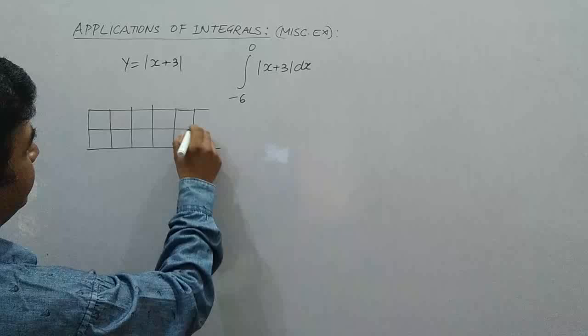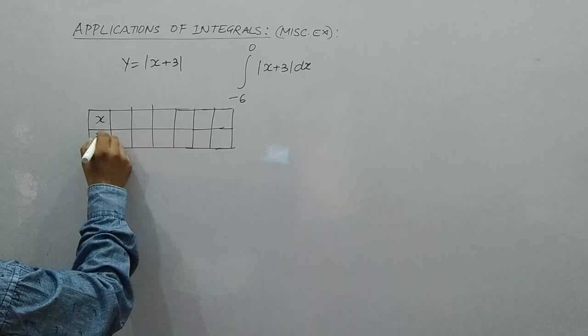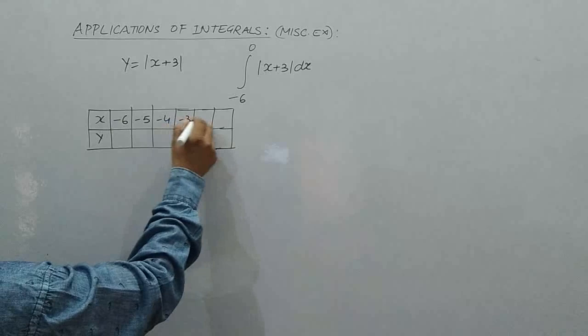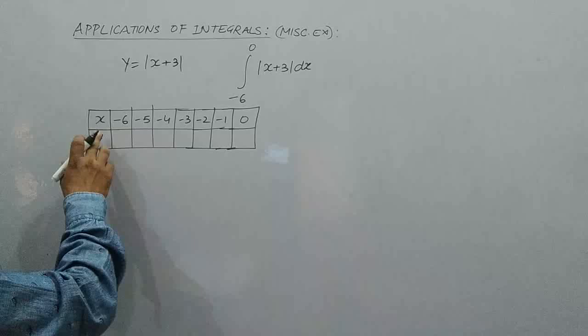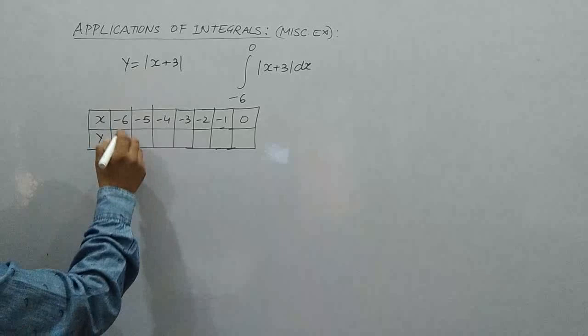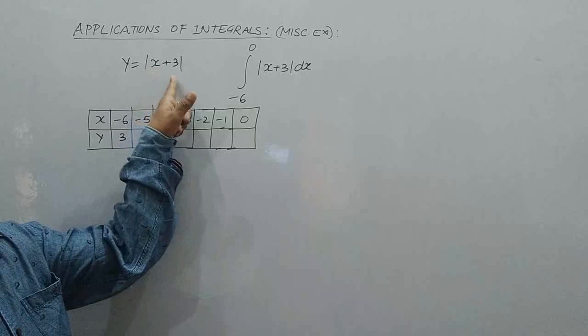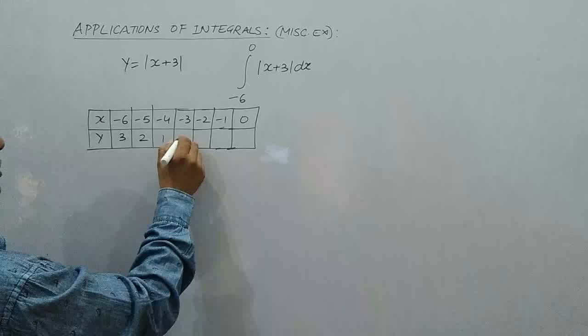This is your x, this is your y. Take the value of x as minus 6, minus 5, minus 4, minus 3, minus 2, minus 1, and at last 0. Whenever x is equal to minus 6, this is minus 6 plus 3, which is minus 3, and taking modulus gives plus 3. By putting x equal to minus 6 you get 3; minus 5 gives 2; minus 4 gives 1; minus 3 gives 0; then 1, 2, and 3.